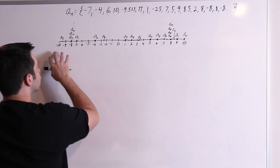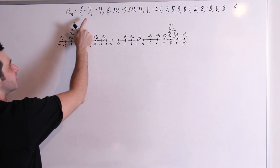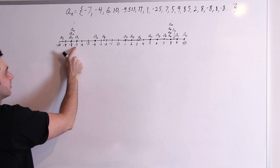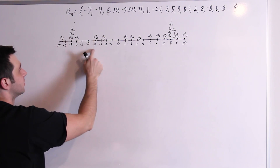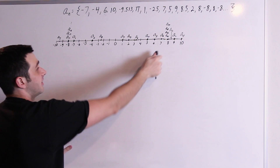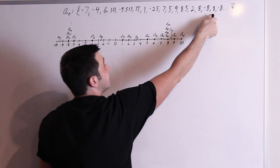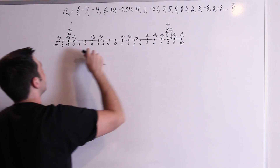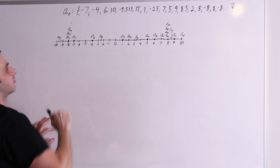So we have an infinite sequence, and I drew this interval just for the visual. The first term is negative 7, so A1 is negative 7. And then negative 4 is the next term, so A2 is negative 4, and so on. You'll notice that 8 is the 14th term, and the 16th, and the 18th, and so on forever — infinitely many terms. Same with negative 8: that's the 15th term, 17th, and so on forever.